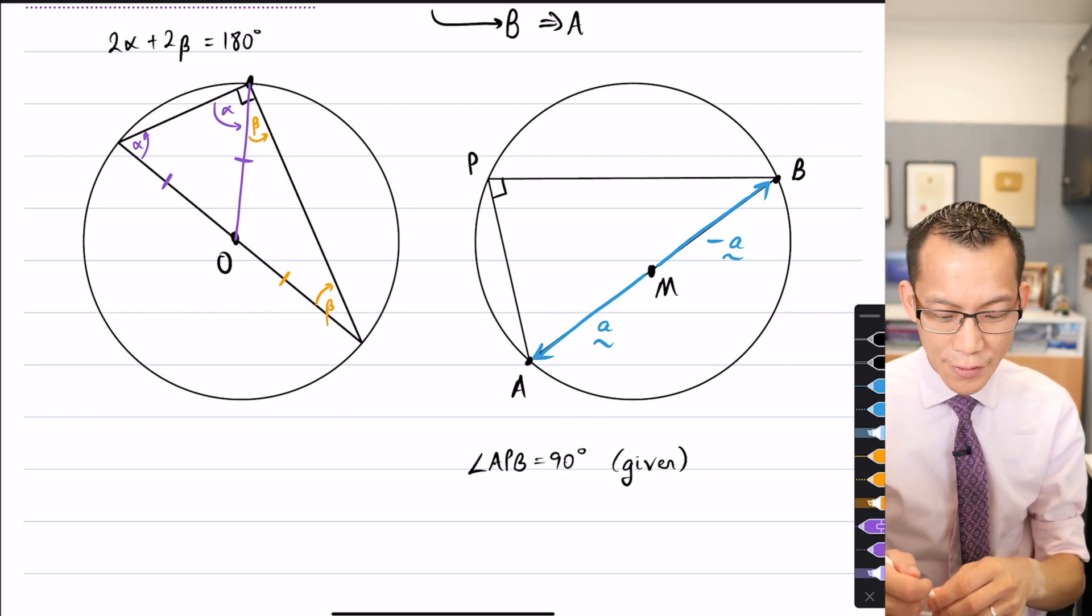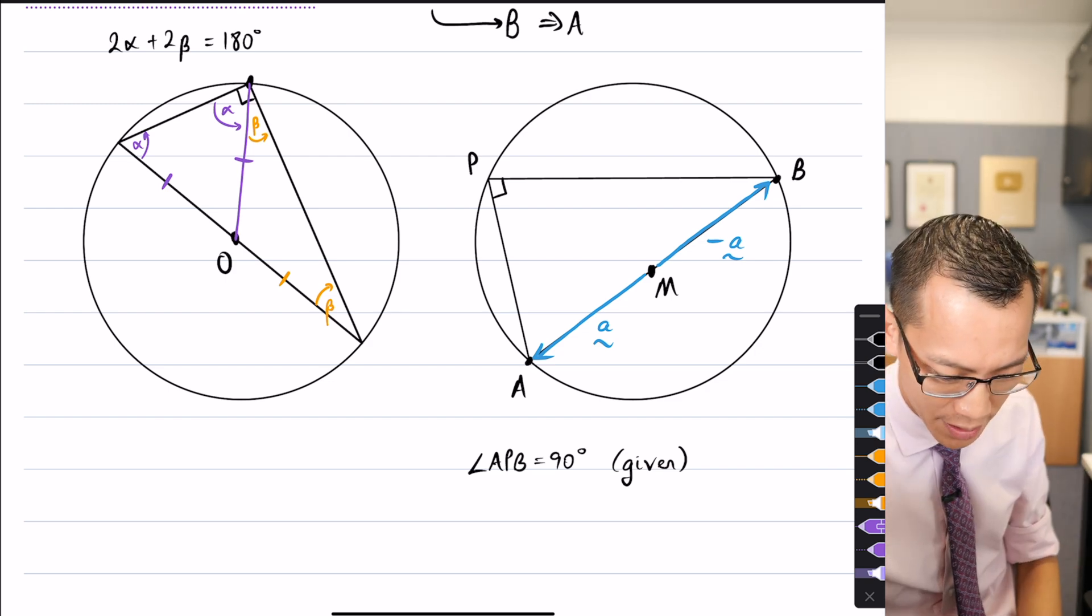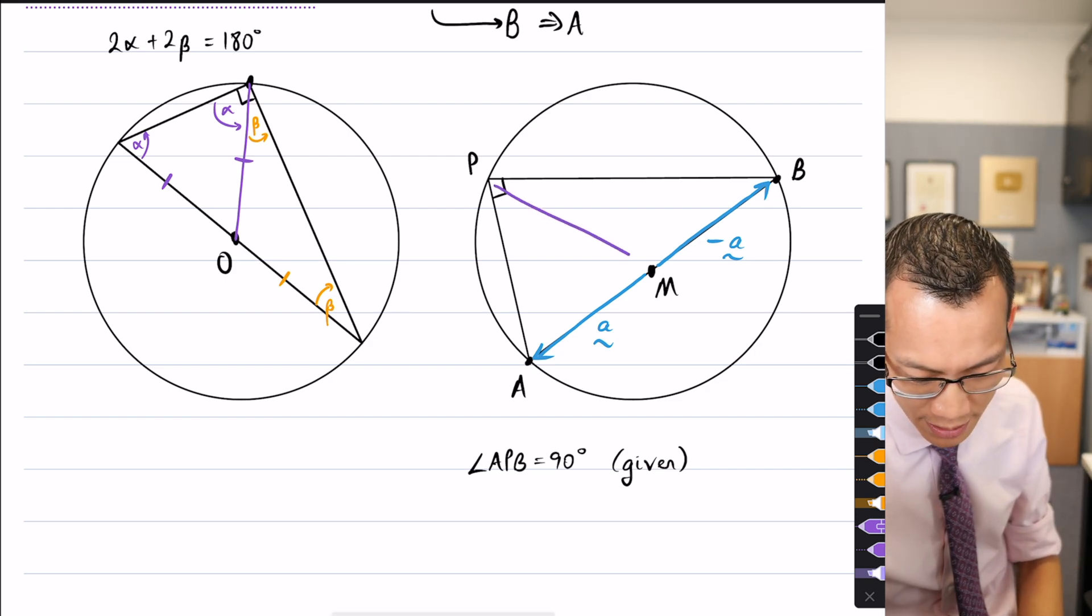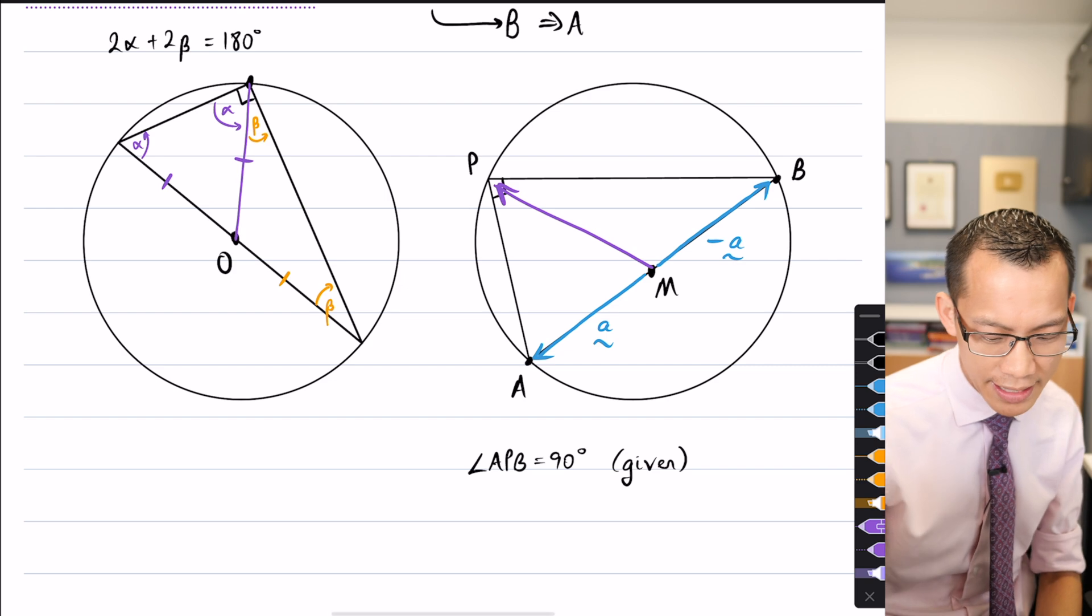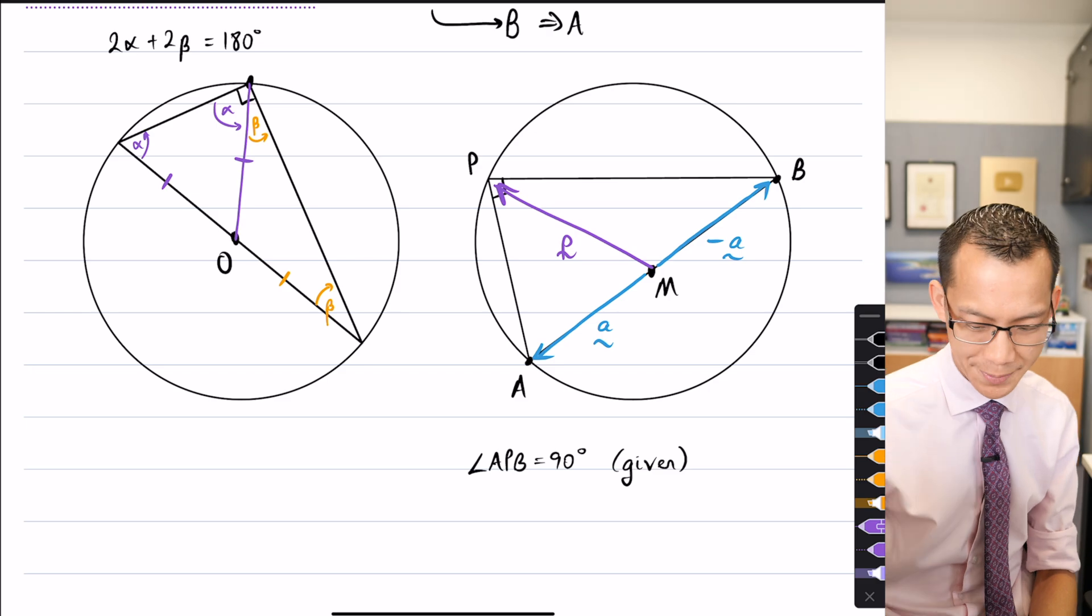All right, now, I've got A and I've got negative A. The last thing I've got here is to get to that point on the circumference, P. So, this is a different vector. Let's call this, I guess because I'm going to capital P, let's call this vector little p.